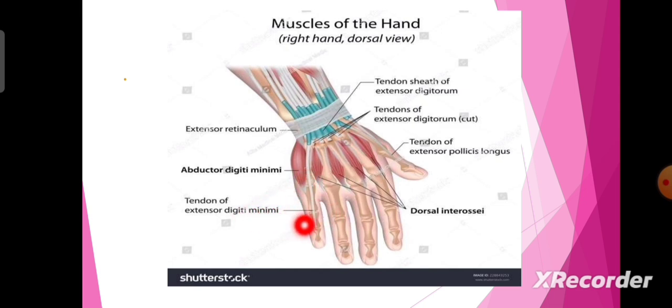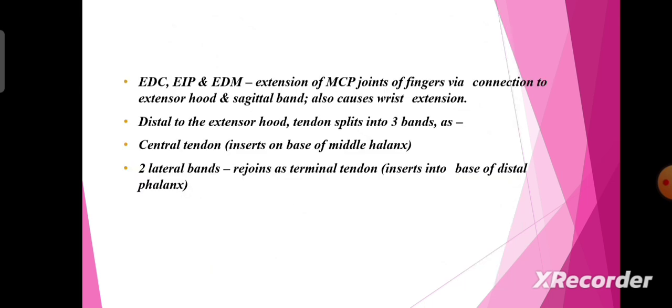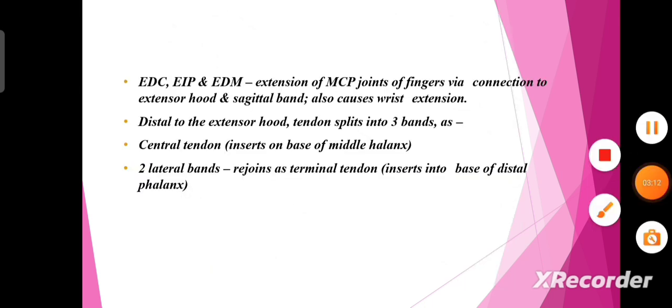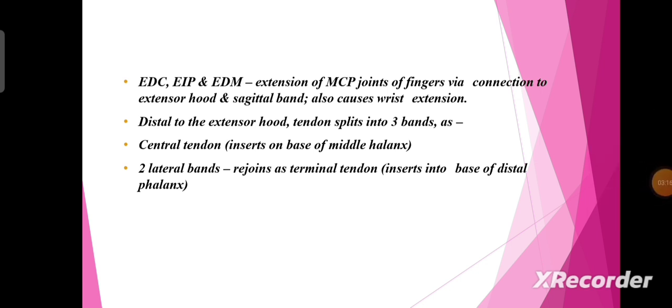Extension of the MCP joints of the fingers occurs via connection to the extensor hood and sagittal band. It also causes wrist extension. Distal to the extensor hood, the tendon splits into three bands: the central slip, which inserts on the base of the middle phalanx, and two lateral bands that rejoin as the terminal tendon, inserting into the base of the distal phalanx.